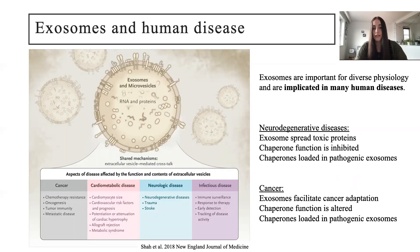Going forward, we can use our findings to better understand the role of exosomes in human disease, including neurodegeneration. We know that neuronal cell death is caused by toxic protein accumulation and that exosomes, which contain chaperones, spread these aggregates. In cancer, exosomes facilitate cancer adaptation and are known to carry chaperones with altered functionality. This means that we can use yeast as a model to better understand how fundamental exosome biology works in normal cells, as a first step to understand how these processes go wrong in pathogenic, disease-causing exosomes.